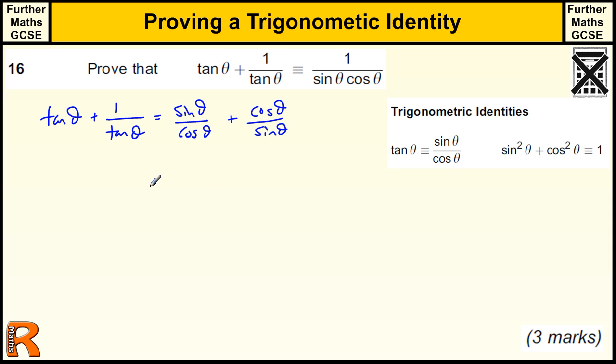Now we've got to try and add these fractions together. So we're going to have a common denominator of cos θ, sin θ. I'm actually going to write it because the answer is in sin θ cos θ. I'm actually going to write it that way around. So we're going to have sin θ cos θ.